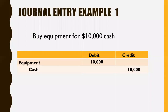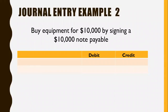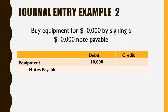The second example is where we buy equipment for ten thousand dollars. Again, we increase our asset with a ten thousand dollar debit. But now we're going to increase our liability — to increase a liability we credit it. So we have notes payable indented a little bit and the credit amount is ten thousand. That's what our journal entry would look like.